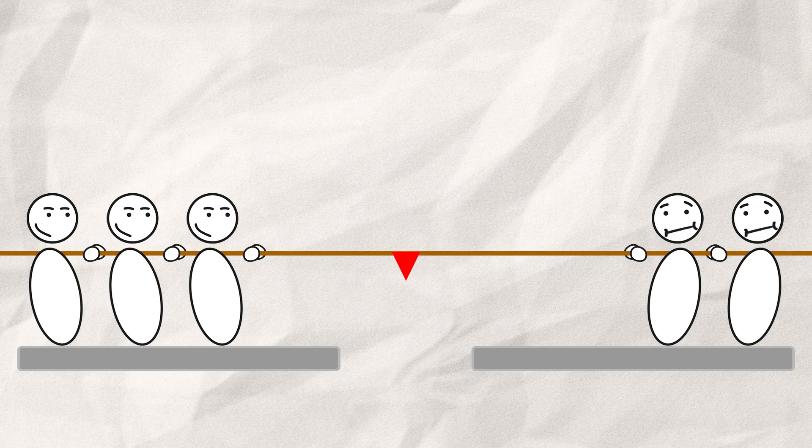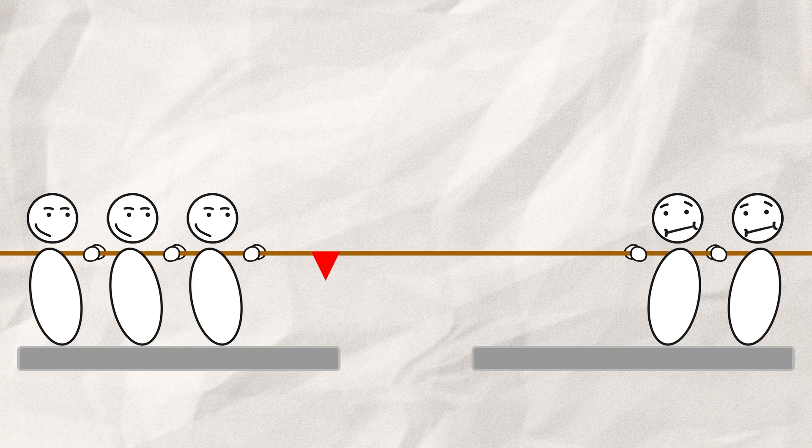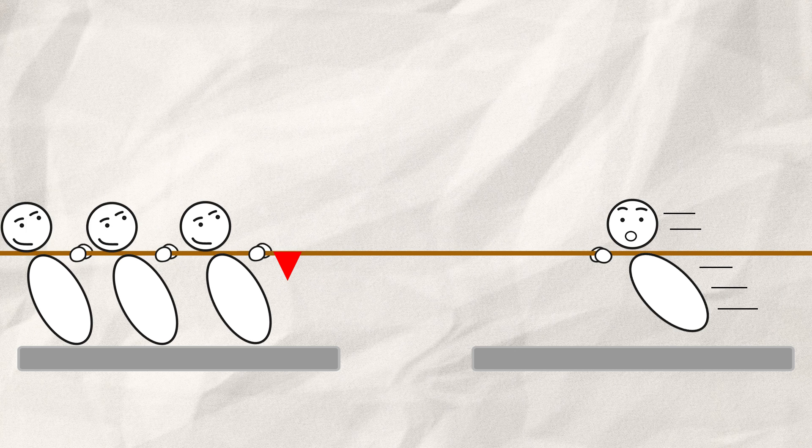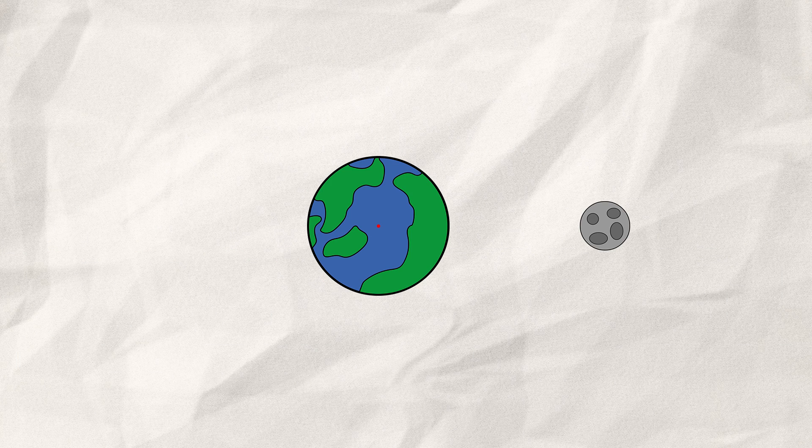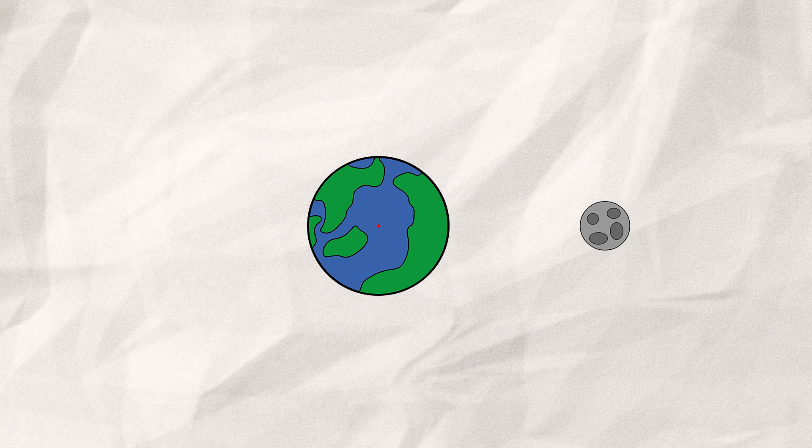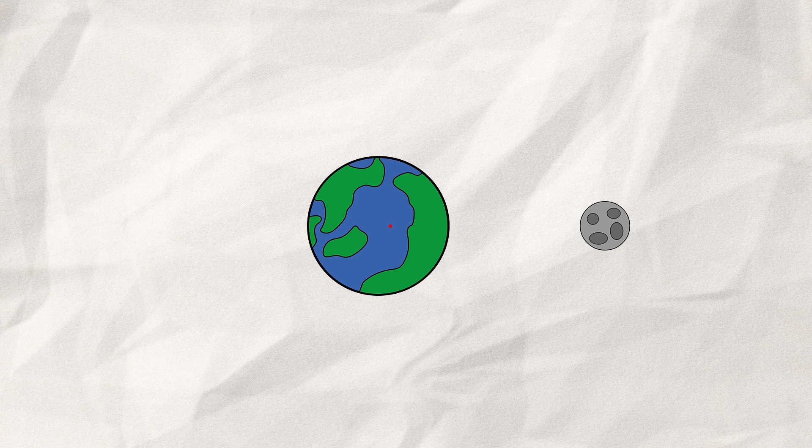But as soon as one team loses a member, the flag moves toward the larger team. The greater the difference, the greater the outcome. Earth's mass is fairly larger than the moon's, so their shared barycenter still lies within earth. But since our moon is relatively large, it puts the barycenter about 2 thirds of the earth's radius away from its core.